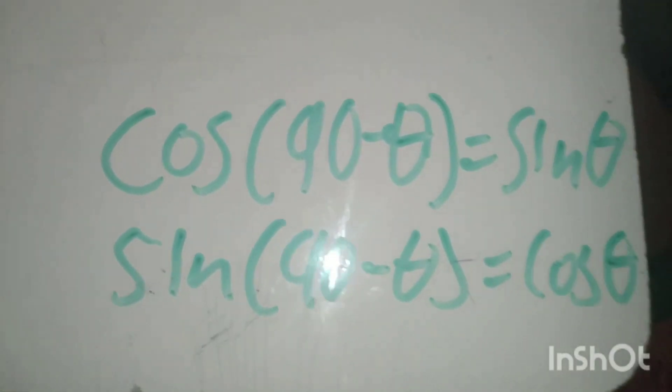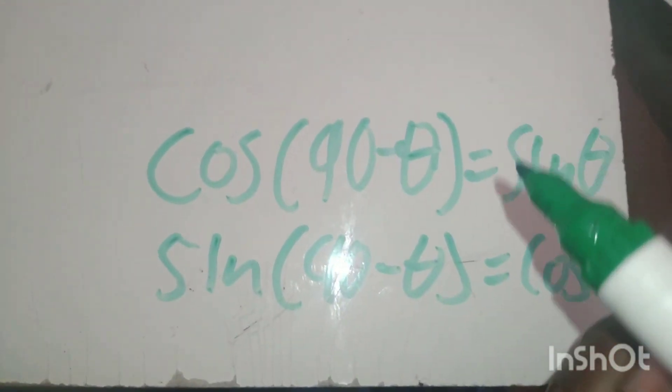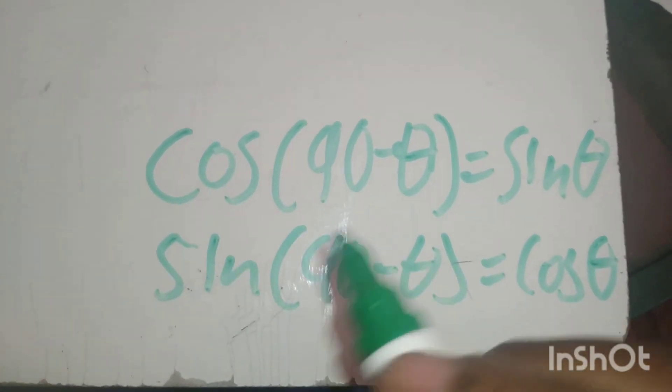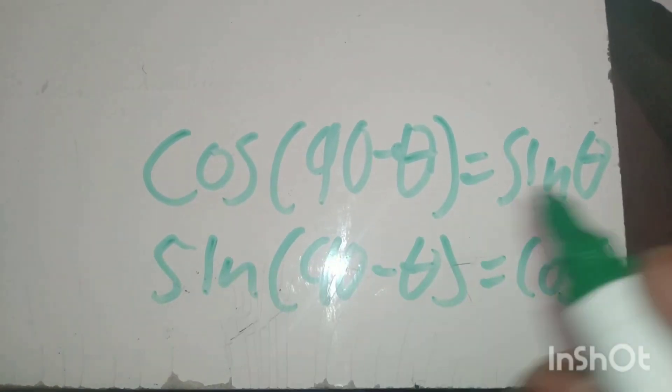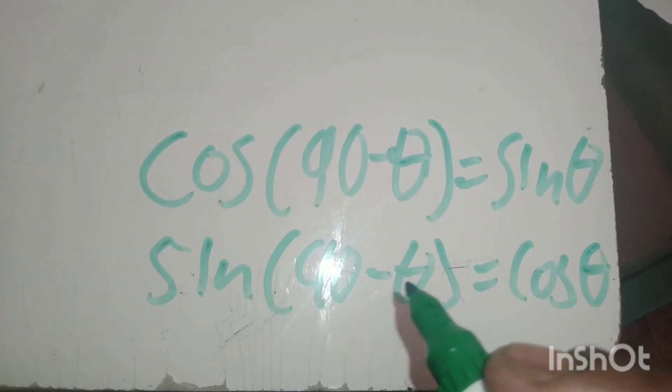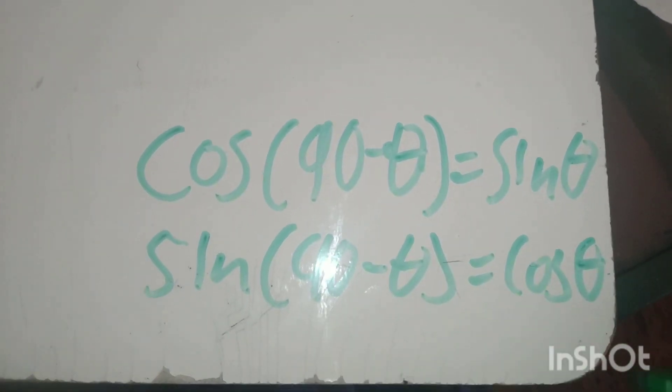Just before we begin, I want you to memorize these identities. Make sure you cram them: cos(90 minus theta) is sin(theta), and sin(90 minus theta) is cos(theta). You can write this down somewhere and just memorize it.